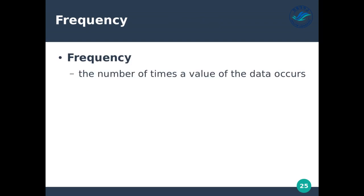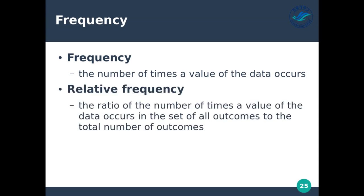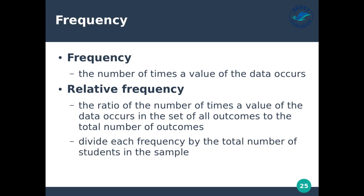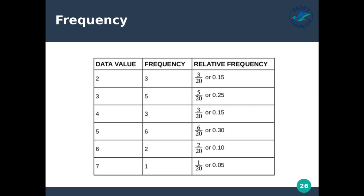Frequency is the number of times a value of the data occurs — for example, the number of times a female answered a question. Relative frequency is the ratio of the number of times a value occurs in the set of all outcomes to the total number of outcomes. To get this, we divide each frequency by the total number of students or whatever we're measuring in the sample. We have a table showing data value, frequency, and relative frequency — we'll talk about this more later.